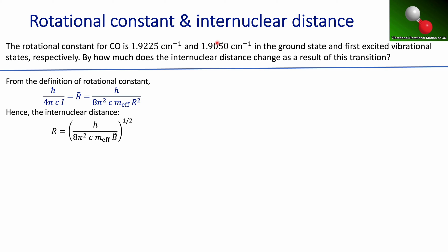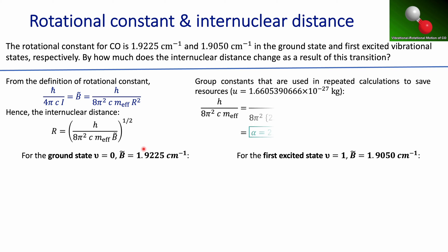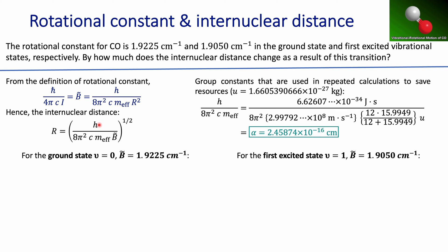We're going to calculate the internuclear distance for each one of those rotational constants — each associated with a particular vibrational state. The ground state has one rotational constant and the first excited state has another. We'll use the same expression, just changing the corresponding values of the rotational constants.